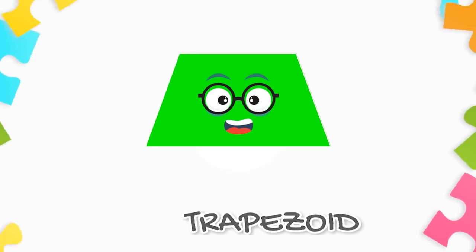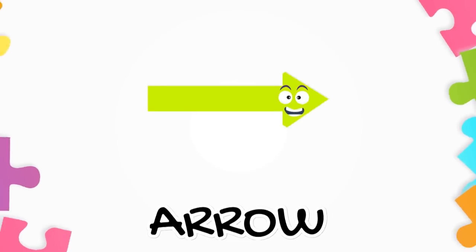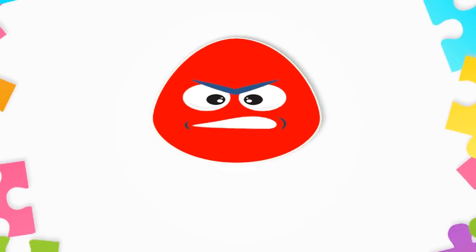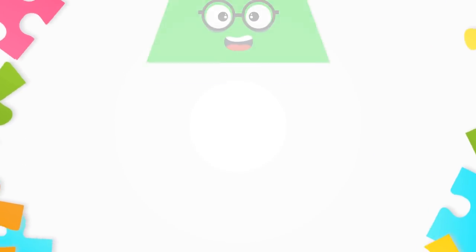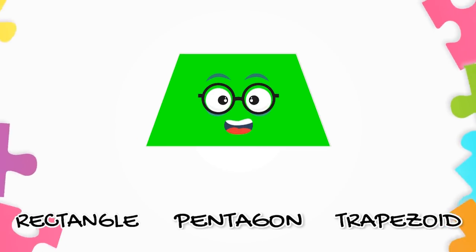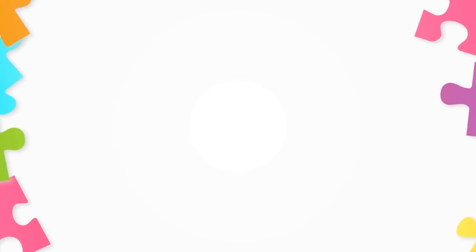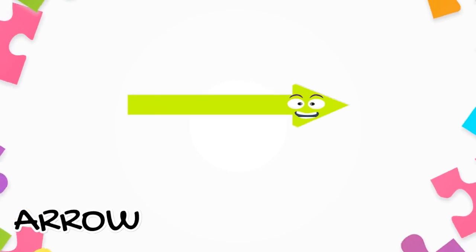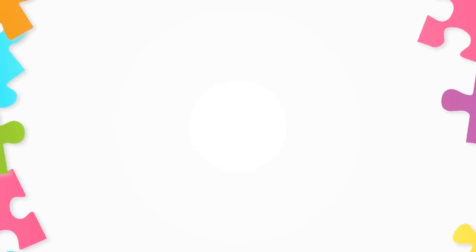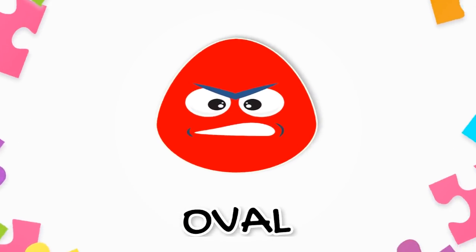Trapezoid. Arrow. Oval. What shape is it? Trapezoid! Awesome! What shape is it? Arrow! Correct! What shape is it? Oval! Excellent!